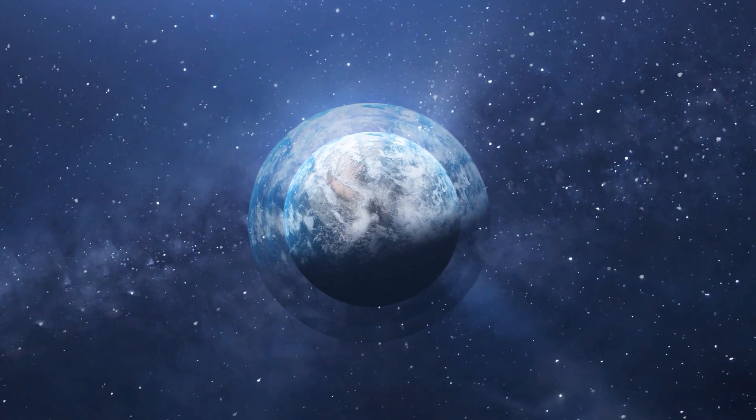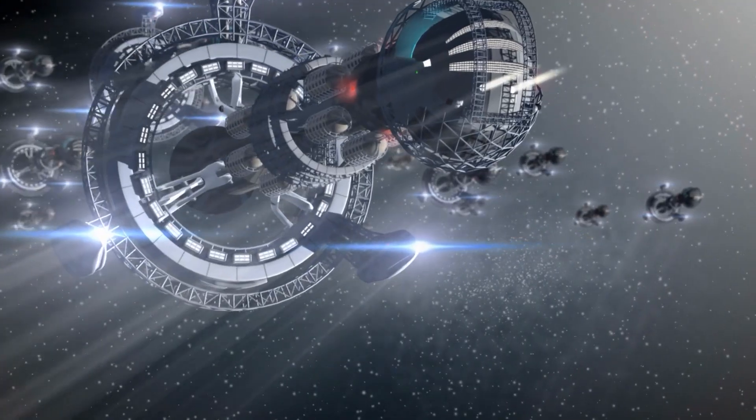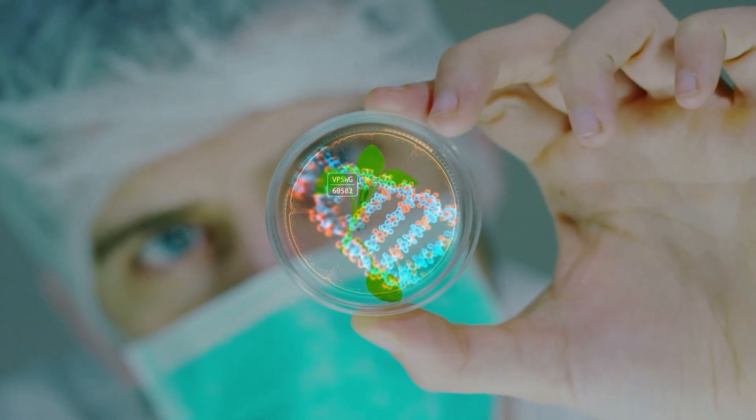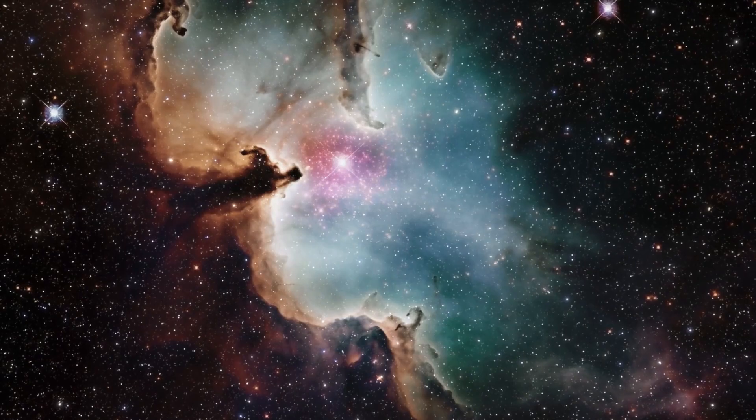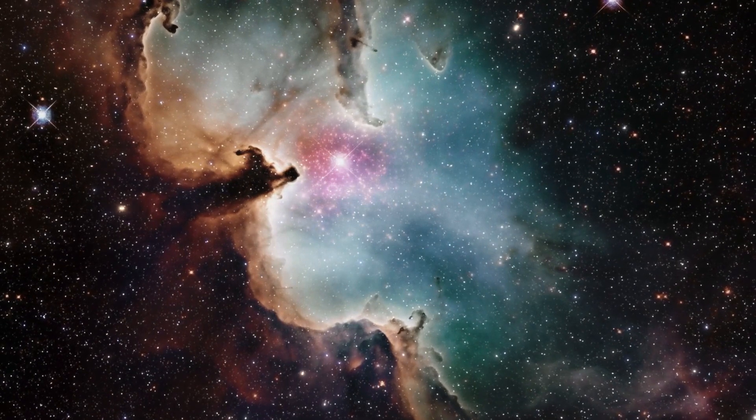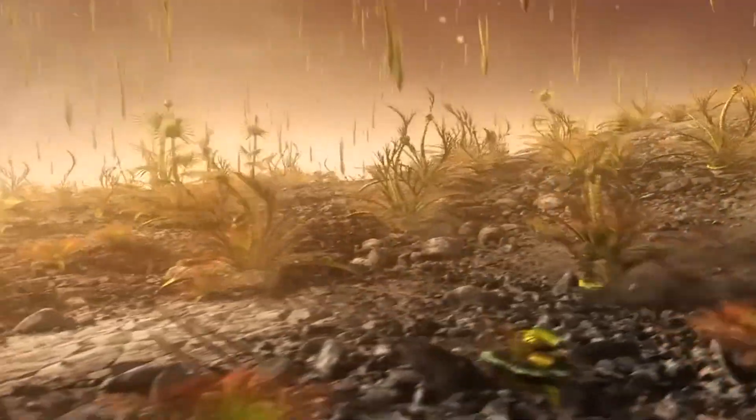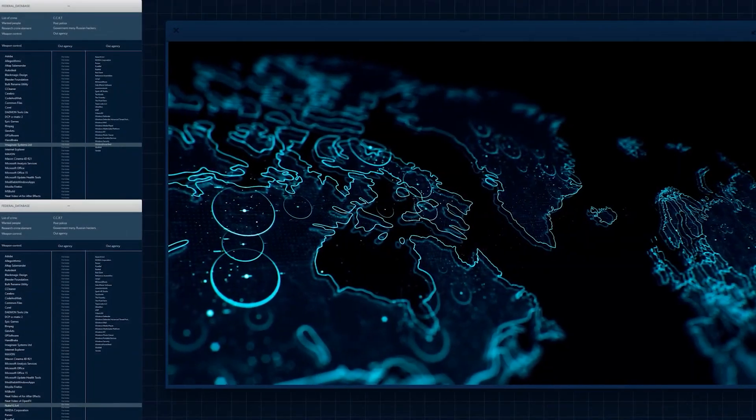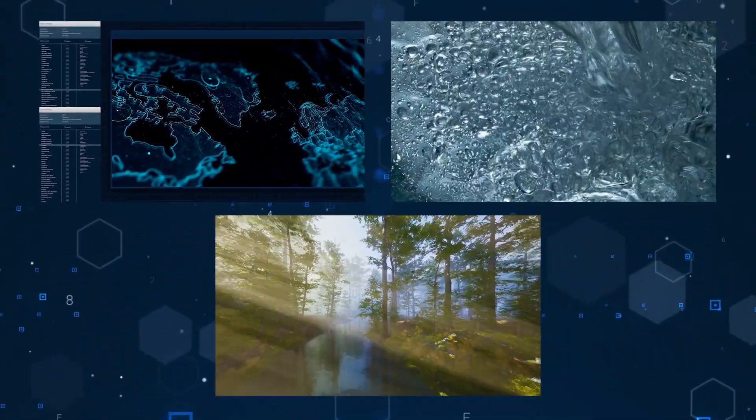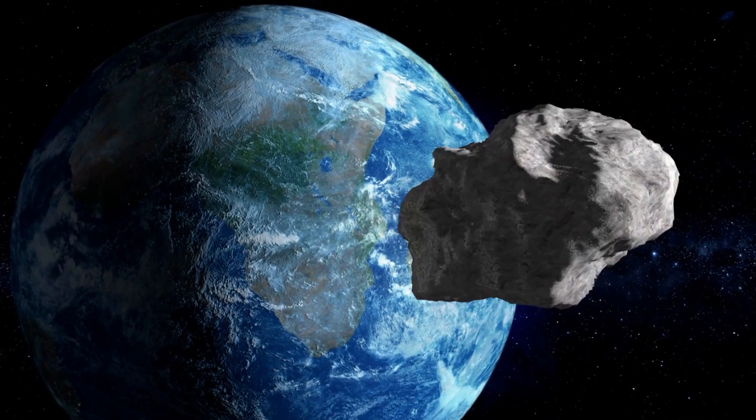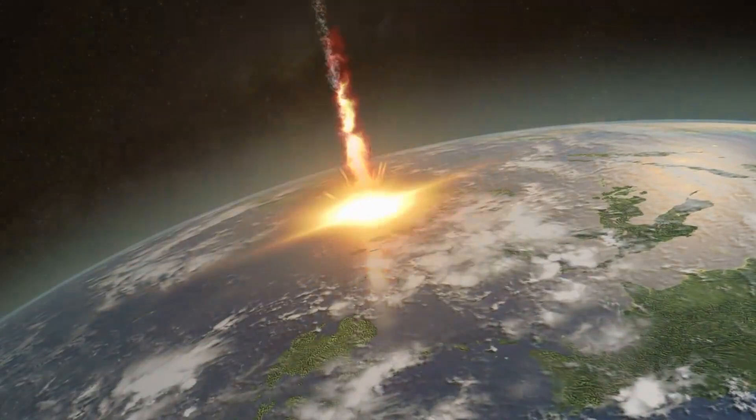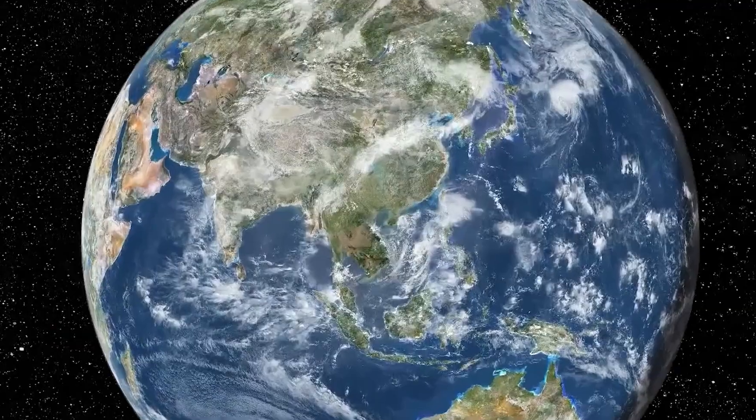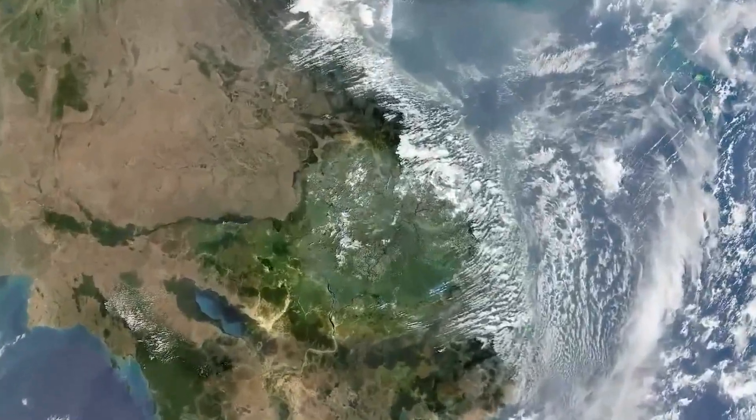For example, some scientists suggest that there are three major filters that separate us from becoming an advanced spacefaring civilization. First up, we've got the emergence of life from the non-living, a phenomenon that scientists call abiogenesis. It's not clear how often this happens in the universe or what conditions are required for it. Some estimate that it's very rare, while others think that it's inevitable, given enough time and chance. This filter may depend on factors such as organic molecules, liquid water, and a stable environment. Oh, and there's a wild theory that life might have arrived on Earth via meteorites or comets, a concept known as panspermia. But no matter how you look at it, without life, there's no shot at intelligence.